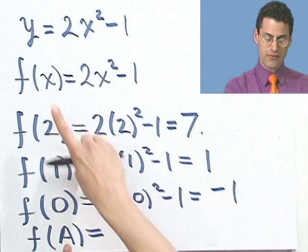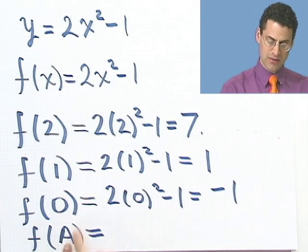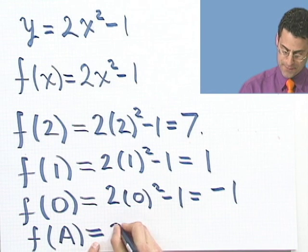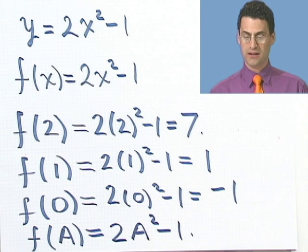OK, well, if we keep our wits about us, all we know is the rule that wherever I see an x, I'm going to replace it by whatever's in here. So since I see an a, all I'm going to do is, wherever I see an x, I'm going to put an a. So I'd see 2a squared minus 1. Not a big deal.